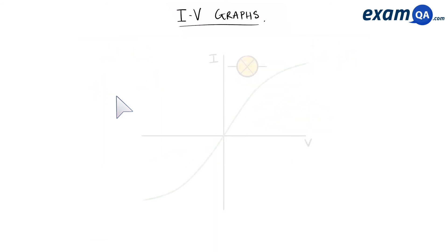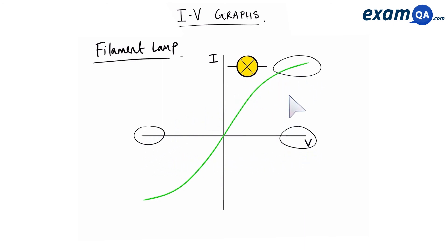Okay, moving on to our next graph. This one is the filament lamp. Now with the filament lamp, you can see that at high voltages in both directions, it begins to flatten off. So what does that mean? Remember we said that when the gradient is low, the resistance becomes higher.